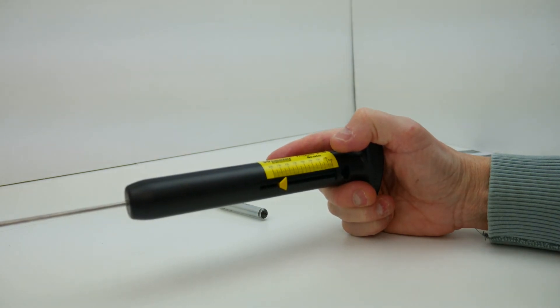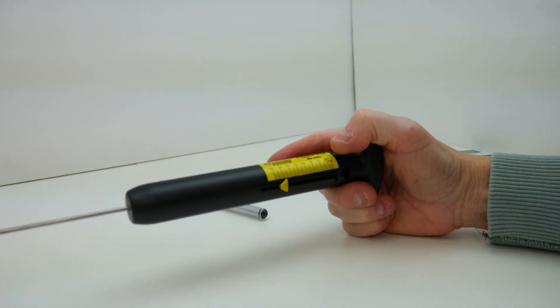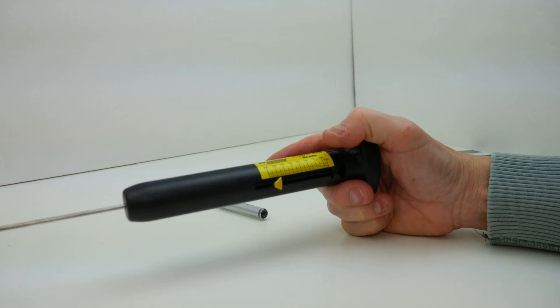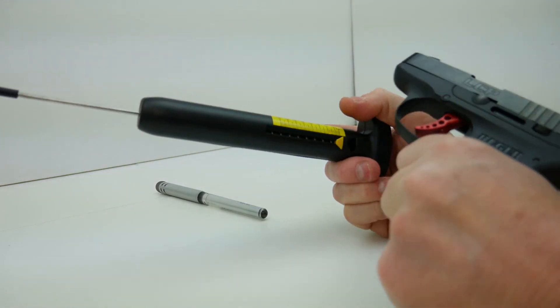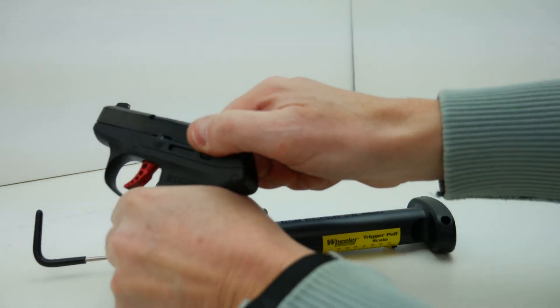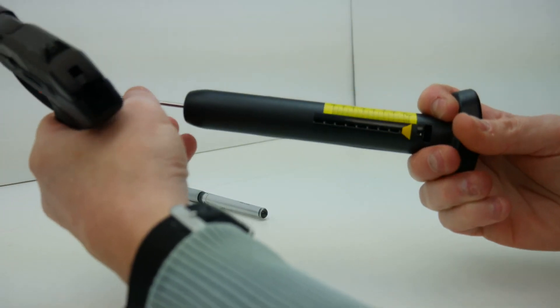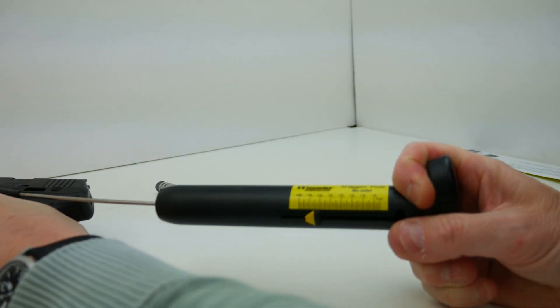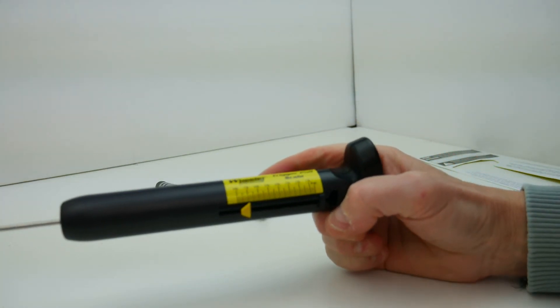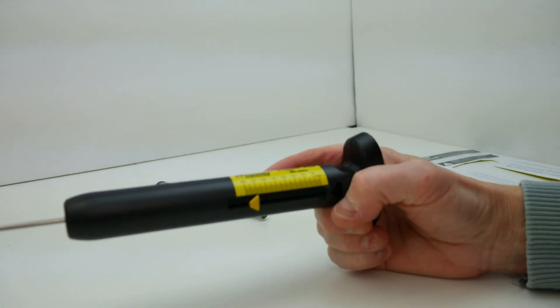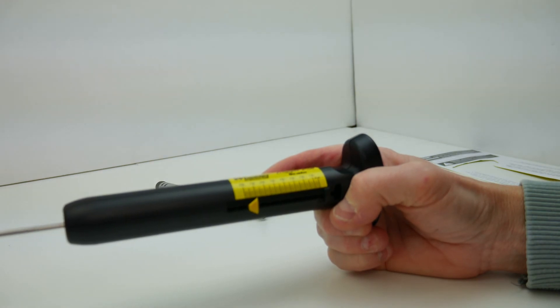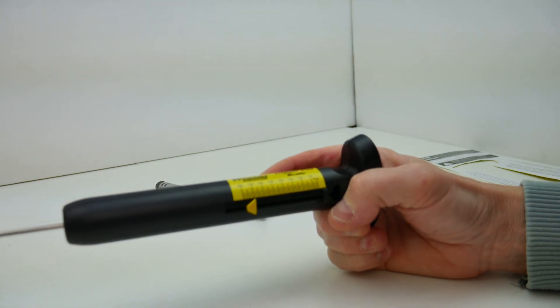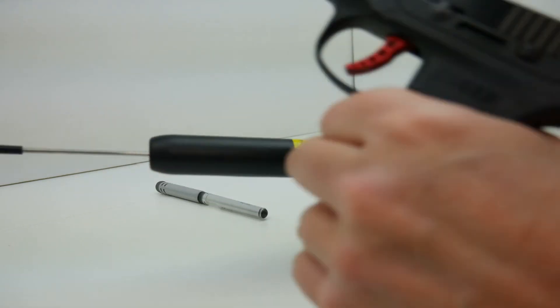That gives us in two ounce increments two four six eight ten, six pounds ten ounces. And that gives us two four six eight ten twelve fourteen, six pounds 14 ounces.